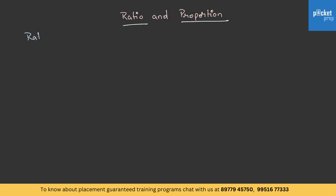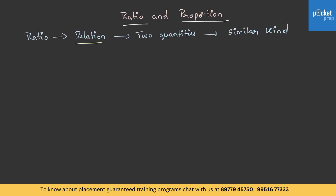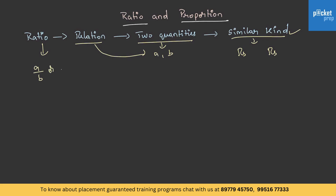What does a ratio mean? It gives the relation between two quantities of similar kind. Both the quantities such as A and B are related only if they are of similar kind. That is, if one quantity is given in rupees, the other should also be in rupees. Then the ratio can be written as A by B or A is to B.